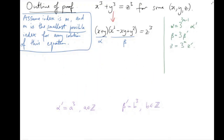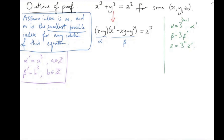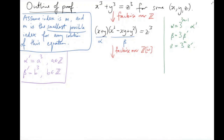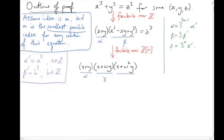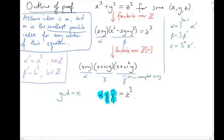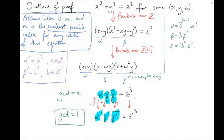Now factorize further over Z[ω], the Eisenstein integers — also a UFD. The factor β splits as (x + ωy)(x + ω²y) = γ·γ̄. So we have α·γ·γ̄ = z³. The gcd of these three factors involves π, the prime element dividing 3. Dividing out all the π's appropriately, we get α′·γ′·γ̄′ = z′³. Applying the fundamental lemma gives γ′ = c³ for some c in Z[ω], with unit taken to be 1.